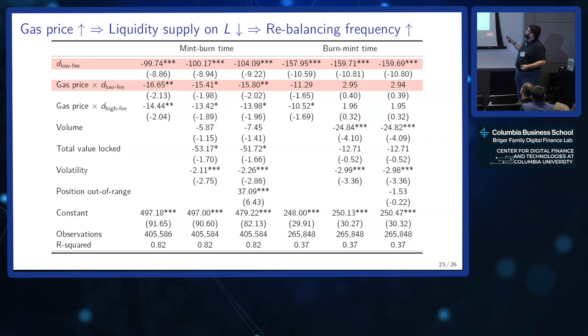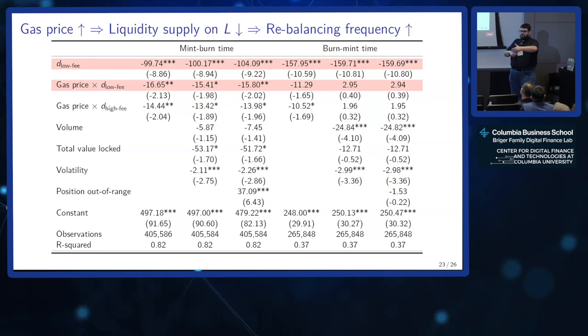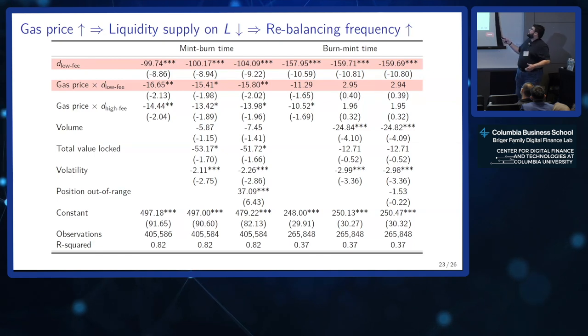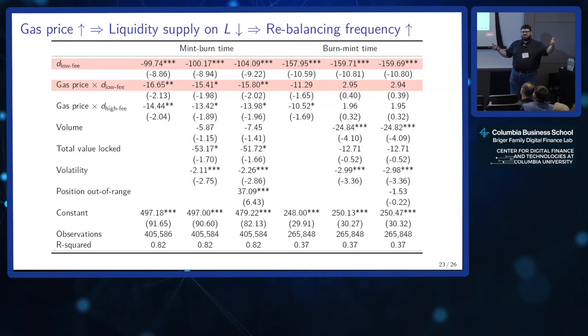A lot of the time, rebalancing happens because the position is out of range. This effect also seems to be driven by gas prices. The mint-to-burn time is around 500 hours — about 20 days — and on the low-fee pool it's about 20% lower. Higher gas prices actually shorten the cycle because as gas prices increase, liquidity supply in the low-fee pool drops, so it takes fewer trades to deplete it, increasing rebalance frequency. The burn-to-mint time — the time between burning and reminting at the new price — doesn't seem to be affected by gas price; it's about 10 minutes.